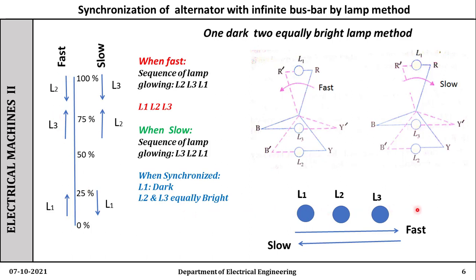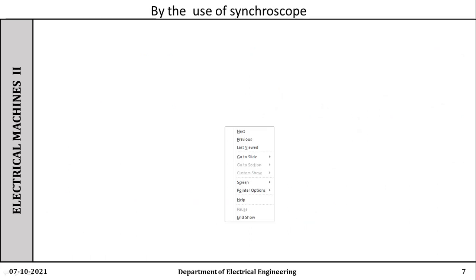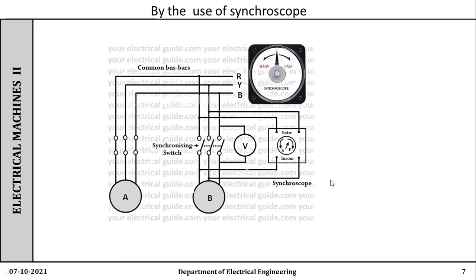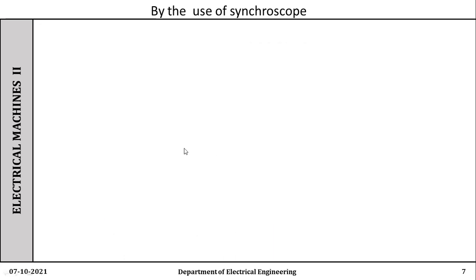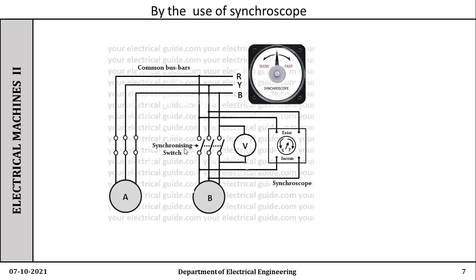This same thing can be shown by a triangle method or a straight line. When the incoming machine is faster, the sequence of lamp glowing is L1, L2, L3. When the incoming machine is slower, the sequence is L3, L2, L1. The drawback of this method is that synchronization depends on the judgment of the operator, and it varies from person to person. Therefore, instead of synchronization by person, we can use the synchroscope.